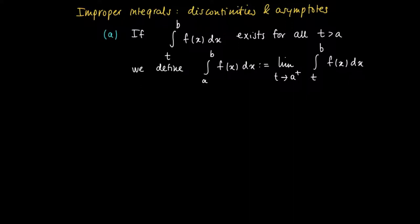So this is just the same as the former example where we treated the function f(x) = 1 over the square root of x, where a was 0 and b was 1.